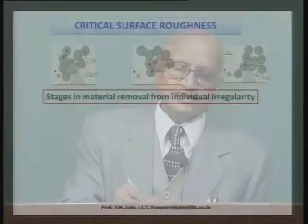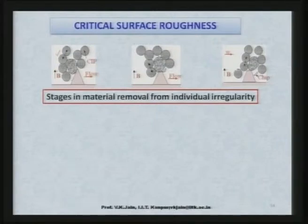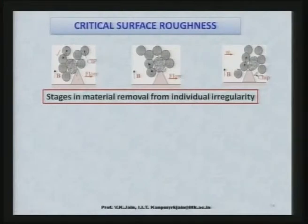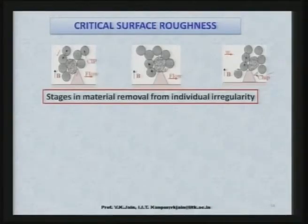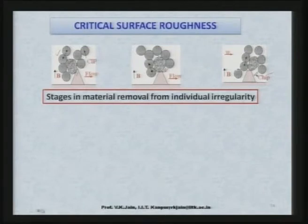When this whole set of abrasive and ferromagnetic particles strikes the workpiece surface peaks, if the cutting force exceeds the resistance offered by the workpiece surface, it shears off the peak in the form of micro or nano chips depending on the normal force value. The microchip is separated out as the chain of ferromagnetic and abrasive particles moves in the axial or tangential direction. Material removal from individual irregularities occurs in three stages.